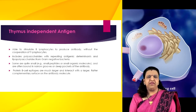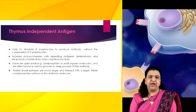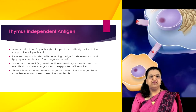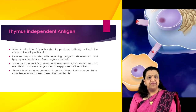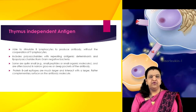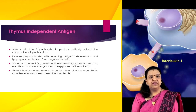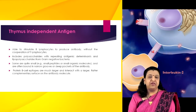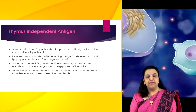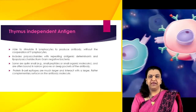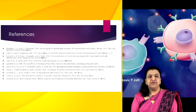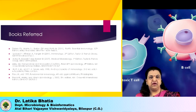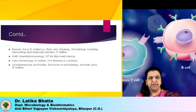The sizes of B-cell epitopes range widely. Some are quite small, such as small peptides or small organic molecules, and are often bound in narrow grooves or deep pockets of the antibody. Protein B-cell epitopes are much larger and interact with a larger, flatter complementary surface on the antibody molecule. These are the references you can consult for further study of immunogens and related topics.